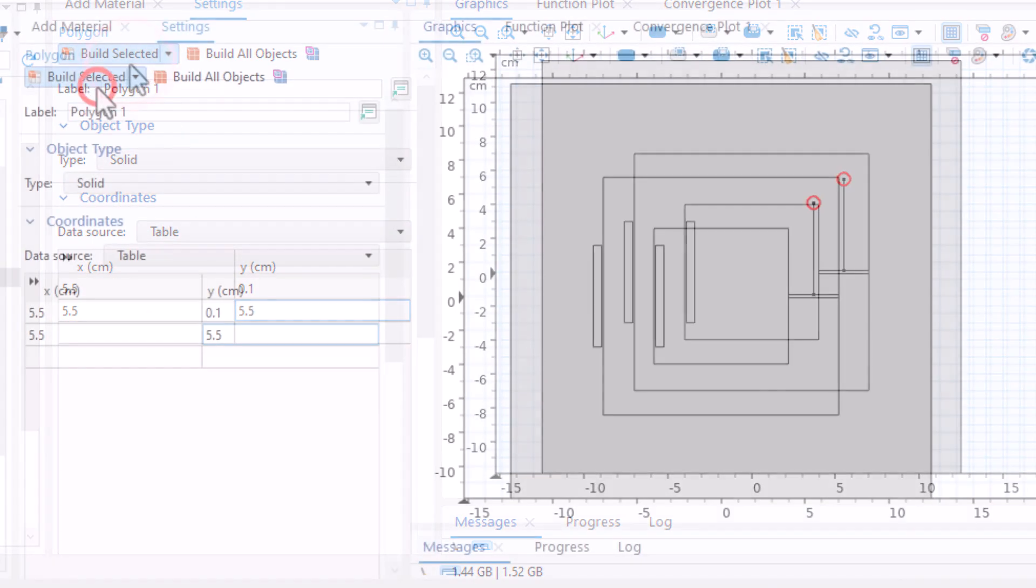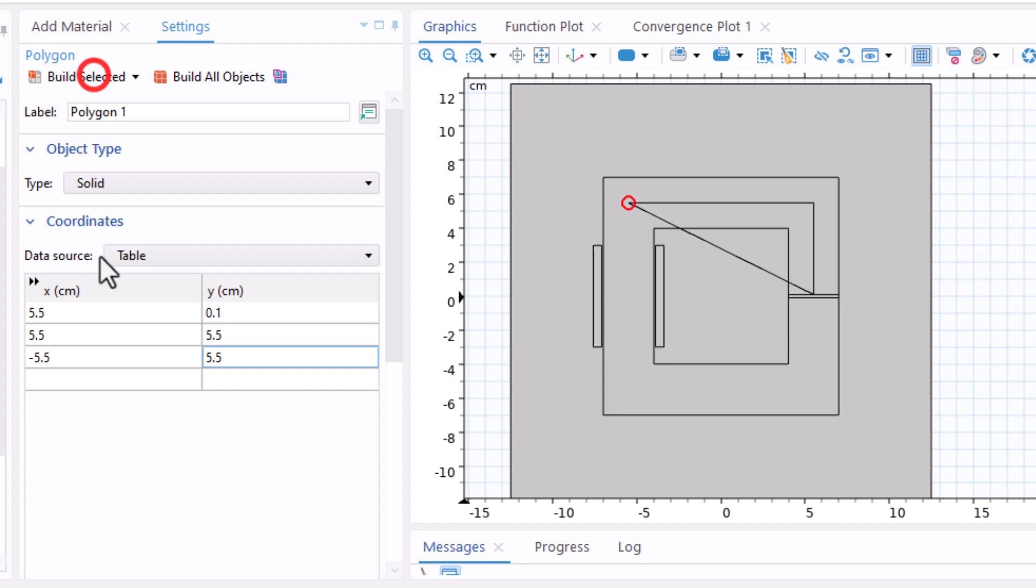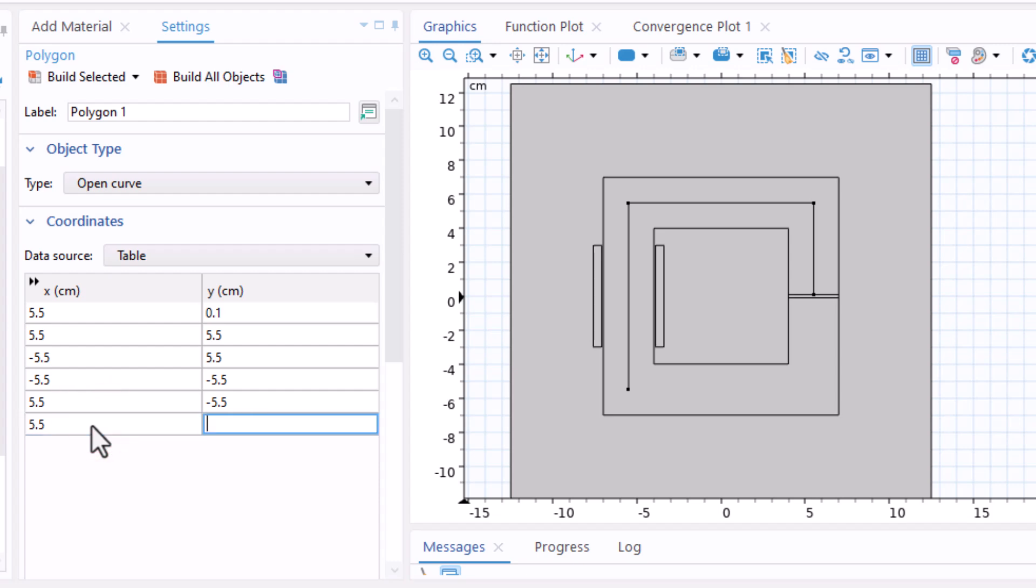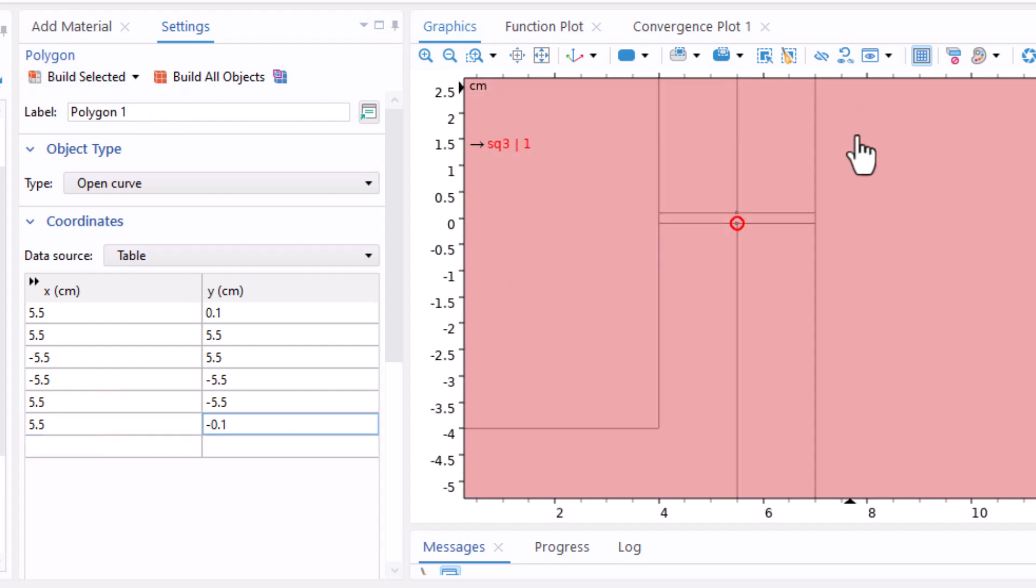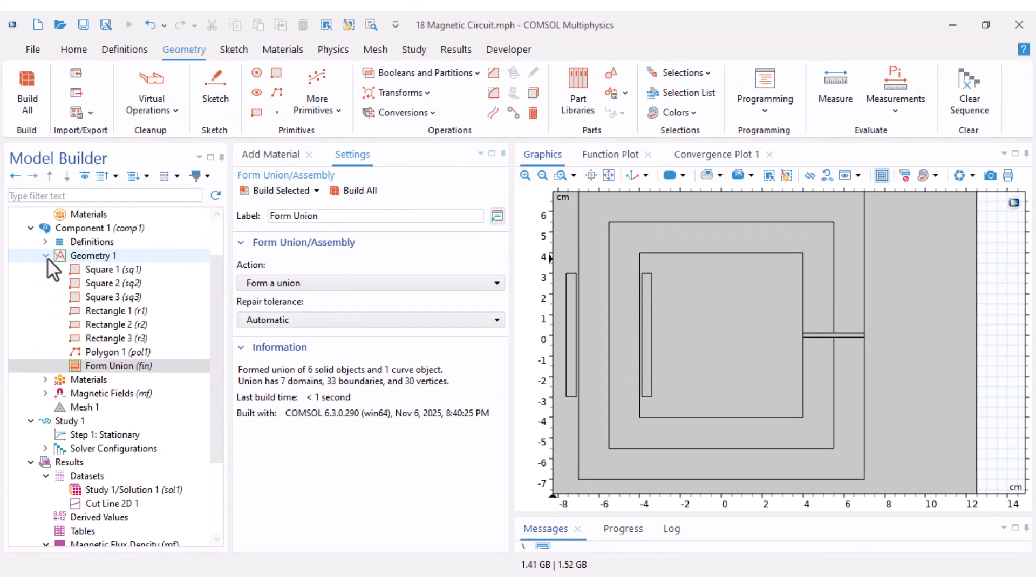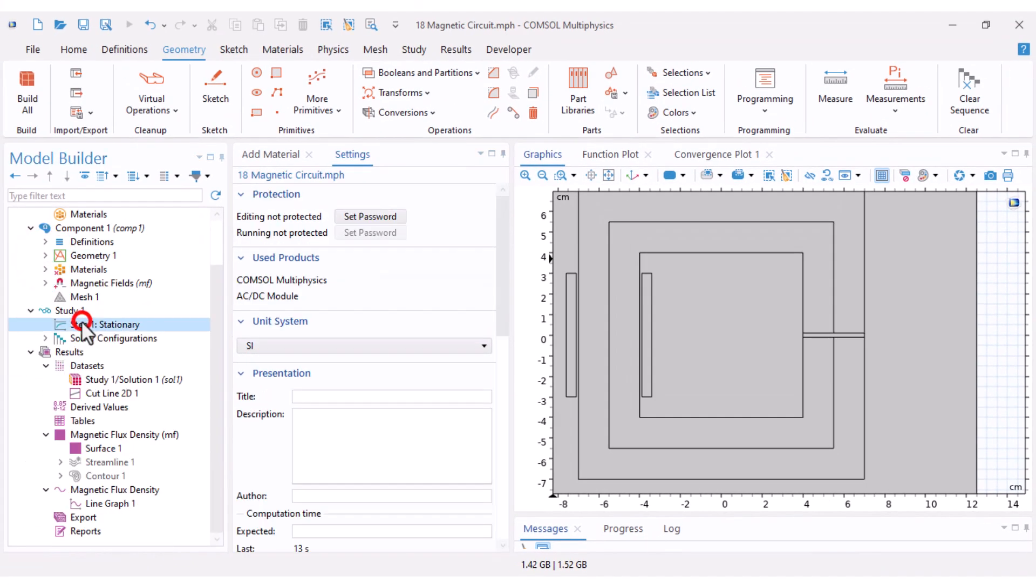My first point would be 5.5 and 0.1, then I continue defining points along the path. I change the type to open curve because it's not a closed one. That's very good. Now I have my magnetic path and because we added it later I should recompute my model.